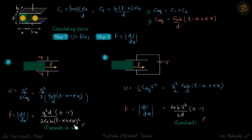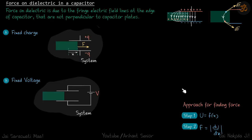In the constant-charge case the denominator contains (ε·x − x + l)² so the force decreases as x increases — meaning the more the dielectric is inside, the smaller the force. In the constant-voltage case, C_equivalent appears in the numerator as a linear function of x, so the force is constant regardless of how far the dielectric is inserted. The force exists because of the curved electric field lines at the fringe.